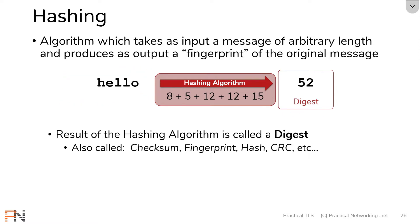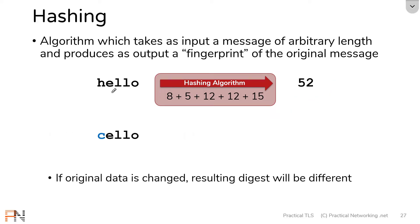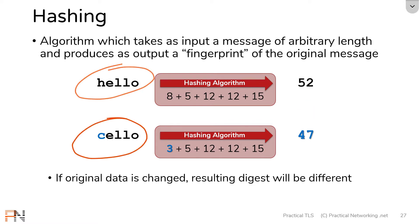Now the purpose of a message digest is you can use the digest to compare to see if two original messages are the same or different. So let me give you an example. Let's say that someone changed my word hello into the word cello. Well now, if I run the word cello through the same hashing algorithm, I am now adding 3, since C is the 3rd letter of the alphabet. All the rest is the same, but the resulting digest is going to be 47. I can easily compare 52 and 47 to determine that my two original messages are different.